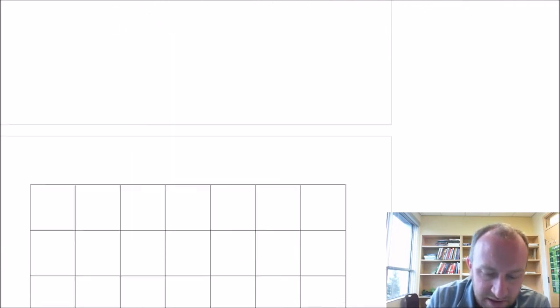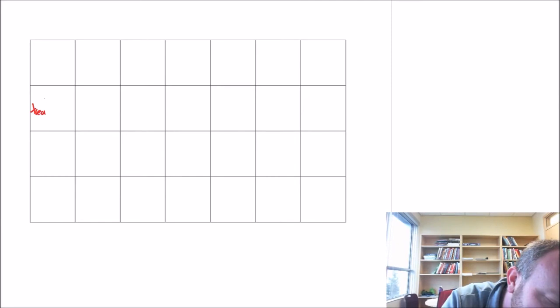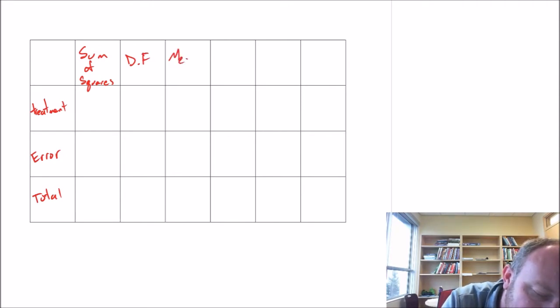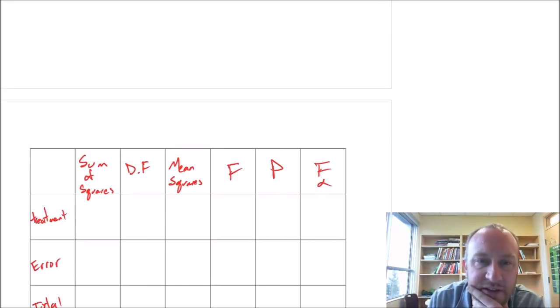And just like we've been doing for every test since the beginning of module 9, we've been specifying a level of significance. So let's move down and here's our table that we're going to fill in. I need to set this up with treatment, error, and total. So we've got all of our partitioning - this is our sum of squares, this will be degrees of freedom, this will be mean squares, this will be our F statistic, our p-value, and our critical F.